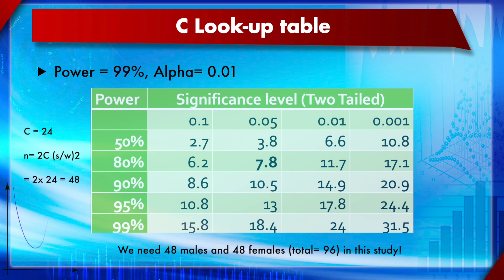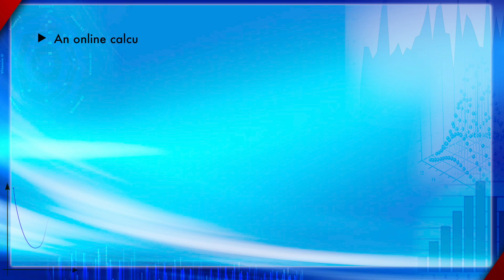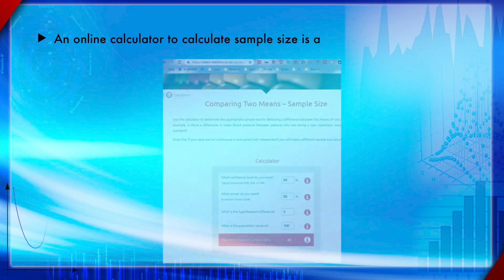This lookup table gives the c value. At power 99% and alpha 0.01, the c value is not 7.8 but 24, as you can see in the table. You simply find the c value and plug it into the equation to solve it.